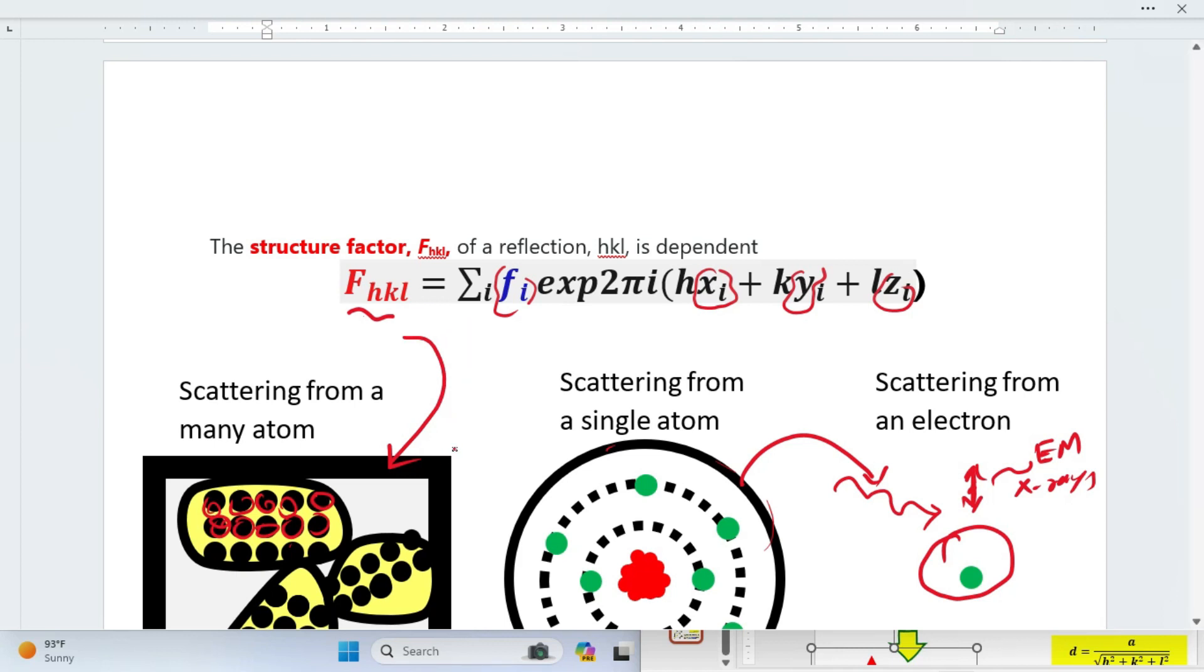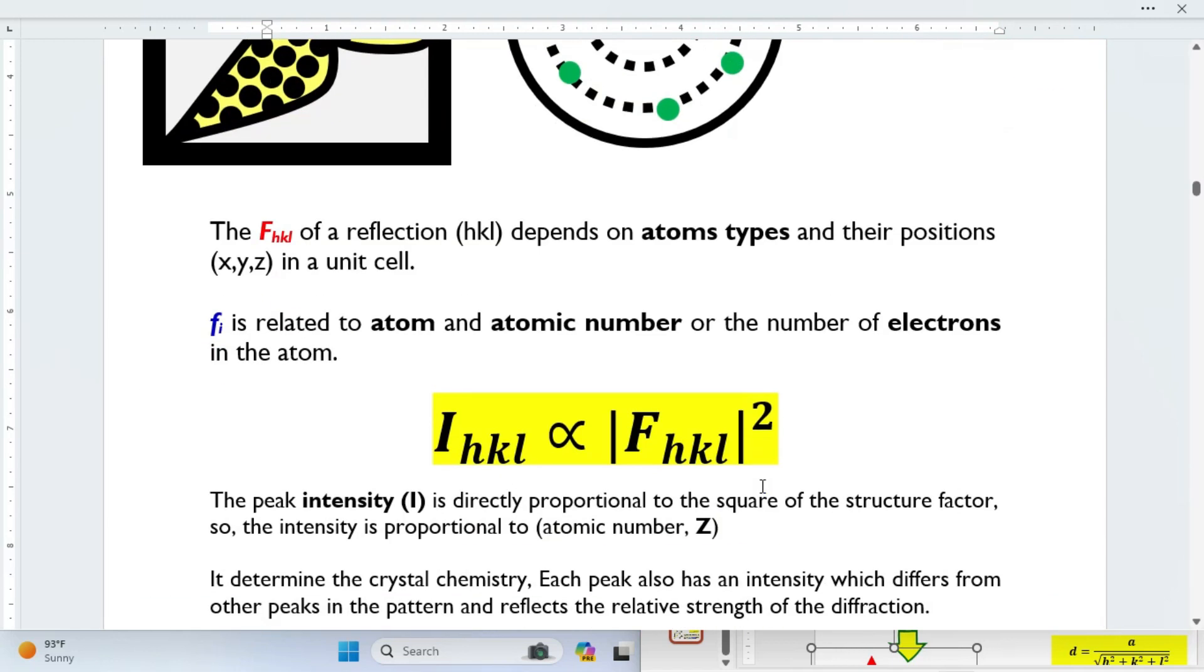This whole story means basically that the intensity is directly proportional to the square of the structure factor. This means that if we have more electrons, more atoms, more intensity. Less electrons, we will have less intensity. The intensity from a certain plane is directly proportional to the square of the structure factor.